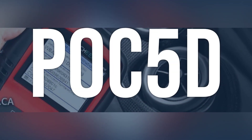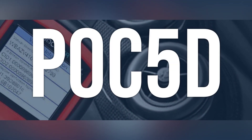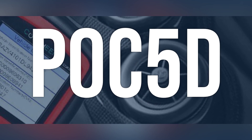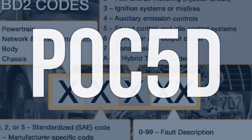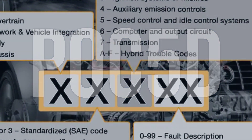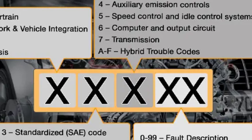OBD2 Fault Code P0C5D means that the motor control module cannot accurately determine the position of the drive motor output shaft.